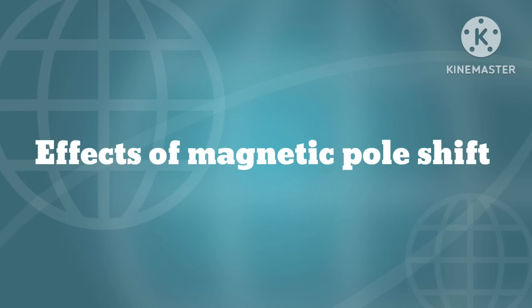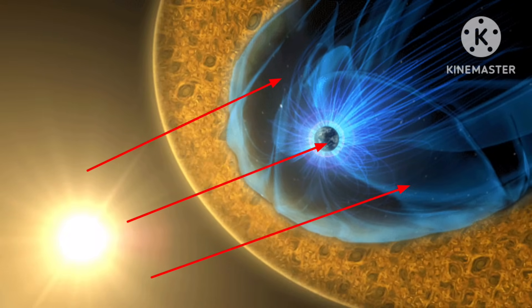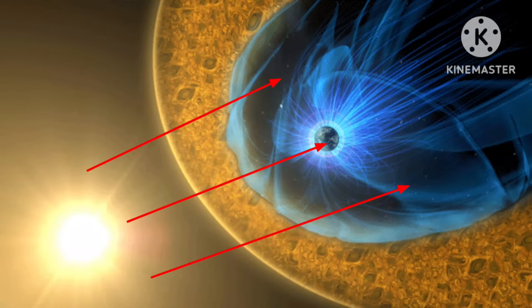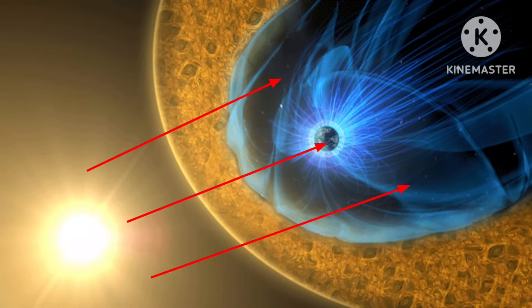Effects of magnetic pole shift. The weakening of the magnetic field that precedes the reversal could make us vulnerable to cancer-causing energy particles and cosmic rays.